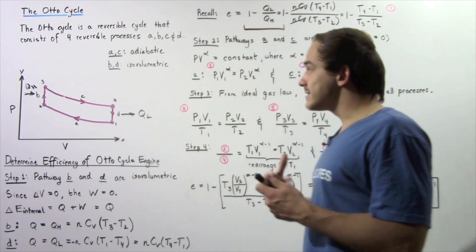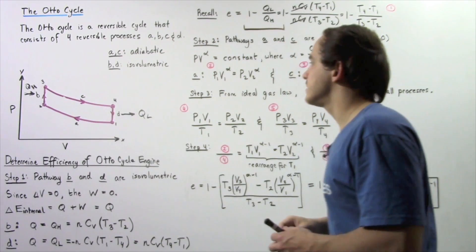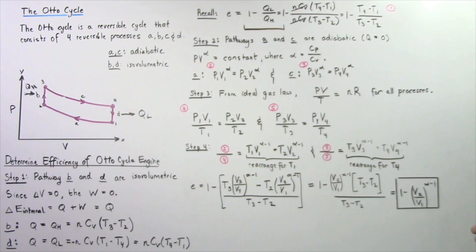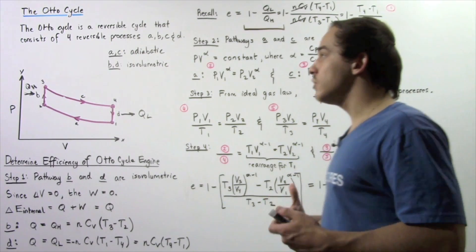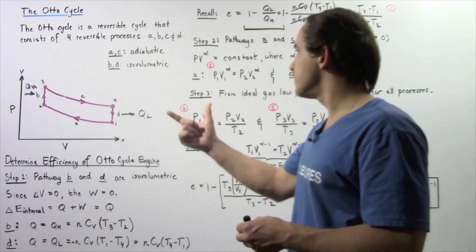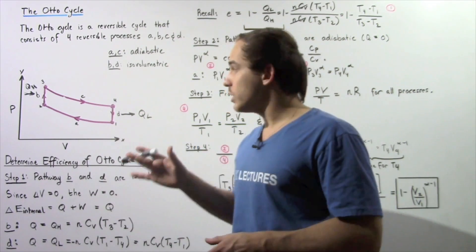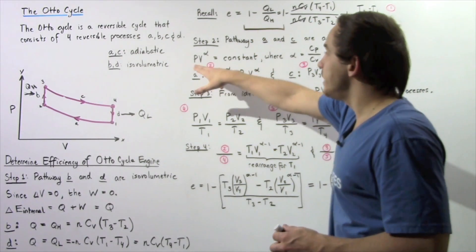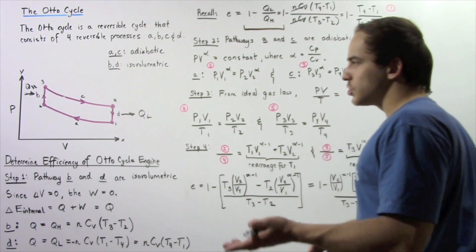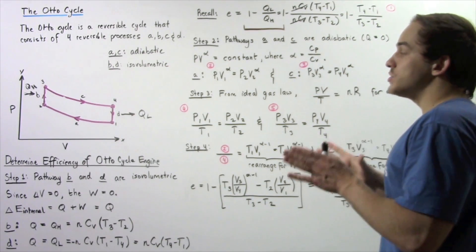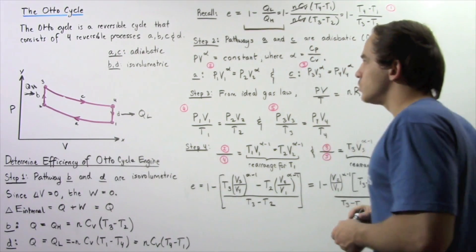In step 2, we examine processes A and C, our adiabatic processes. Because these processes are adiabatic, Q equals zero — no heat flows into or out of our system during these processes. Since we are dealing with an adiabatic process and assuming our gas is an ideal gas, we can use the equation for a slow adiabatic process with an ideal gas: pressure times volume raised to alpha equals a constant.